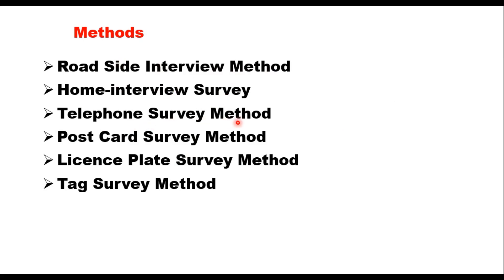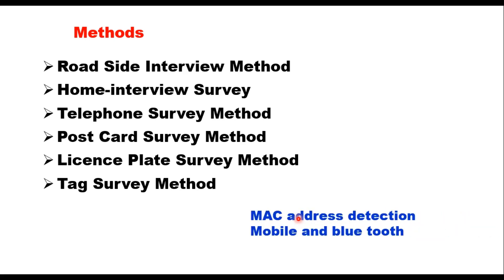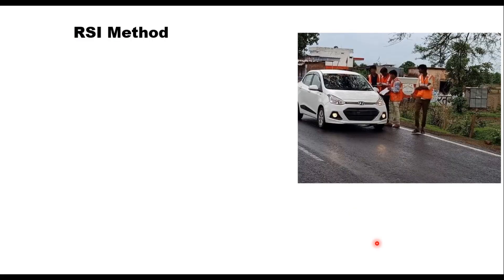There are several methods of doing OD survey: roadside interview method, home interview method, telephone survey method, postcard survey method, license plate survey method, and tag survey method. In addition to these, there are other methods which make use of technology to get data quickly and economically, like MAC address detection or use of mobile and Bluetooth information.